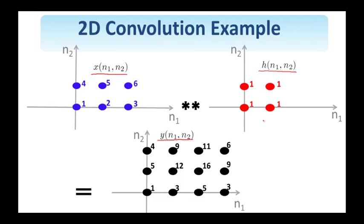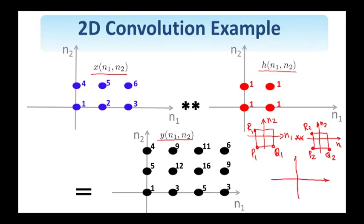One can show in general that if I have a signal that has support as shown here and determined by these points, P1, Q1, R1, and this signal is convolved with another signal that has support P2 as determined by these points, P2, Q2, R2, then the resulting signal from this 2D convolution will have support as shown here and determined by this point. This point is P1 plus P2. This is Q1 plus Q2. This is R1 plus R2.